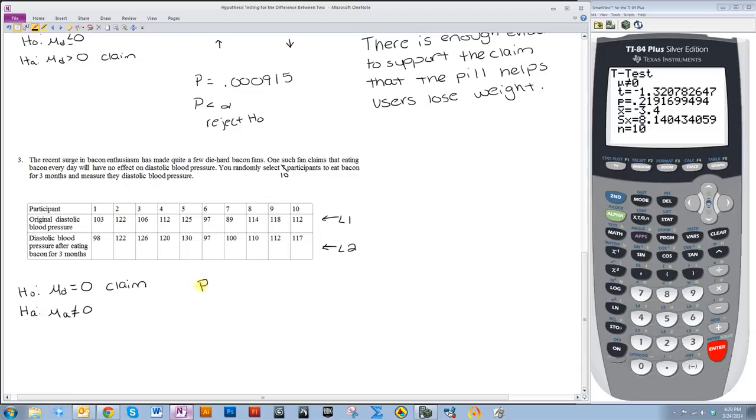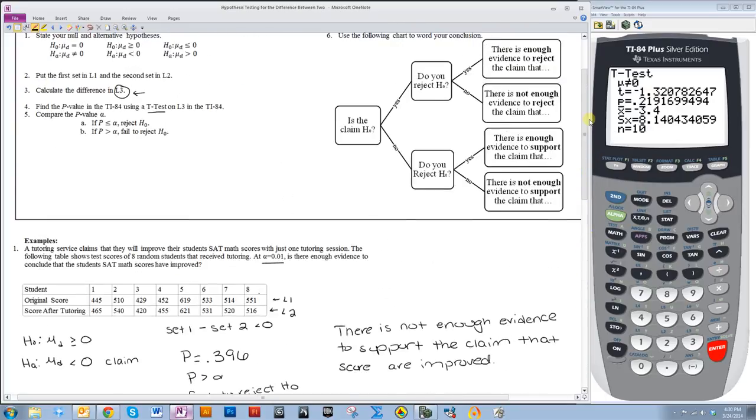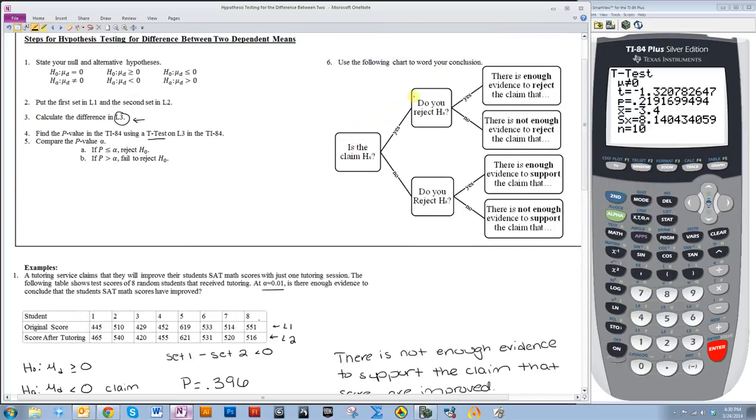So P is equal to 0.219. So P is greater than alpha, so I fail to reject H0. We'll go back up to our little flow chart here. Is the claim H0? Yes. Do I reject H0? No. There is not enough evidence to reject the claim.